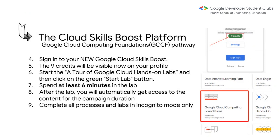Once you complete that process, you'll automatically get access to all the content for the campaign. Click on your profile and you can see the monthly subscription. Then go to the tab called 'Paths' and scroll down — you will see 'Google Cloud Computing Foundations' in a red box. It won't be right at the top, so scroll a bit and you'll find it. That's where you start the whole campaign.